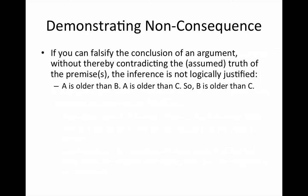Here are some examples. Consider: A is older than B, A is older than C, so B is older than C. Suppose age A is 20, B is 19, and C is also 19. When we take those numbers, we've preserved the truth of our premises, but we've shown that the conclusion 'B is older than C' can be false.